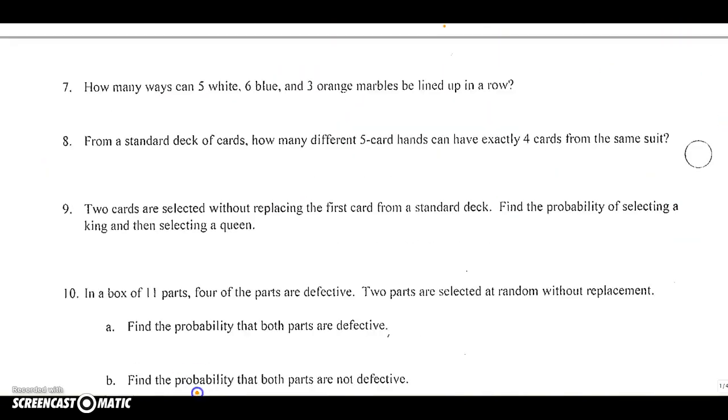Let's see how much farther we can get. How many ways can 5 white, 6 blue, and 3 orange marbles be lined up in a row? Lined up in a row, that's a permutation question. Making sure we know when to use what. Total marbles, 5, 6, and 3 adds up to 14, so that's 14. I'm arranging all of them, so I'm picking all 14. But once again, you will notice,